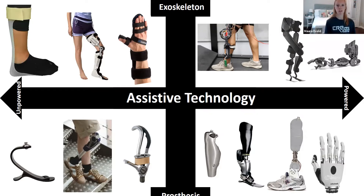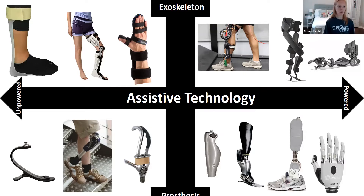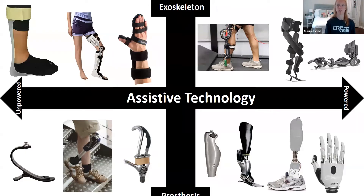Note that some of these devices are for the lower limbs, so they're going to assist the user with tasks such as walking, climbing stairs, and getting up and out of a chair, while other devices are designed for the upper limbs, helping with other common daily tasks such as unscrewing a water bottle or cutting up vegetables for dinner.